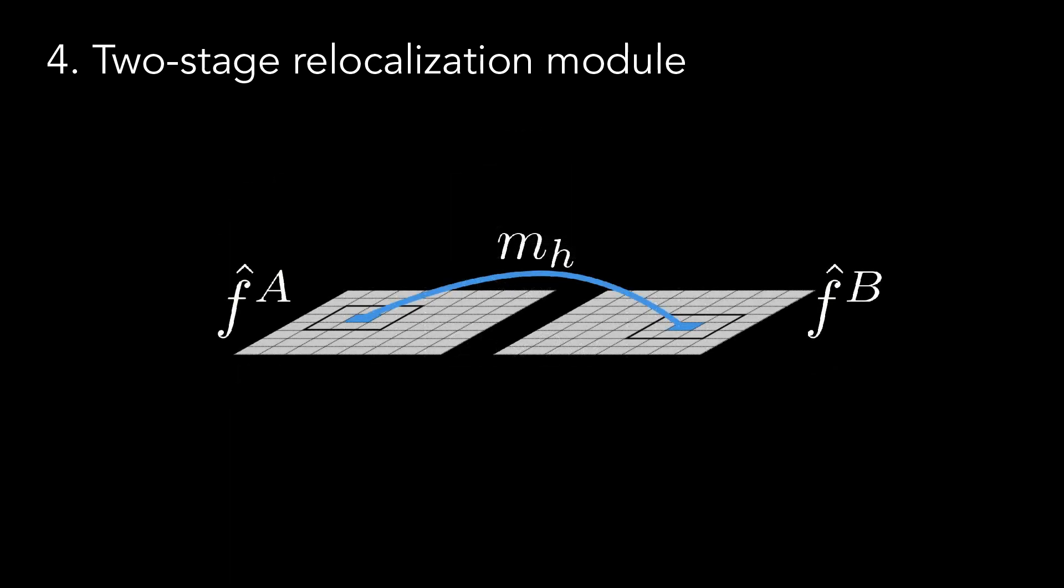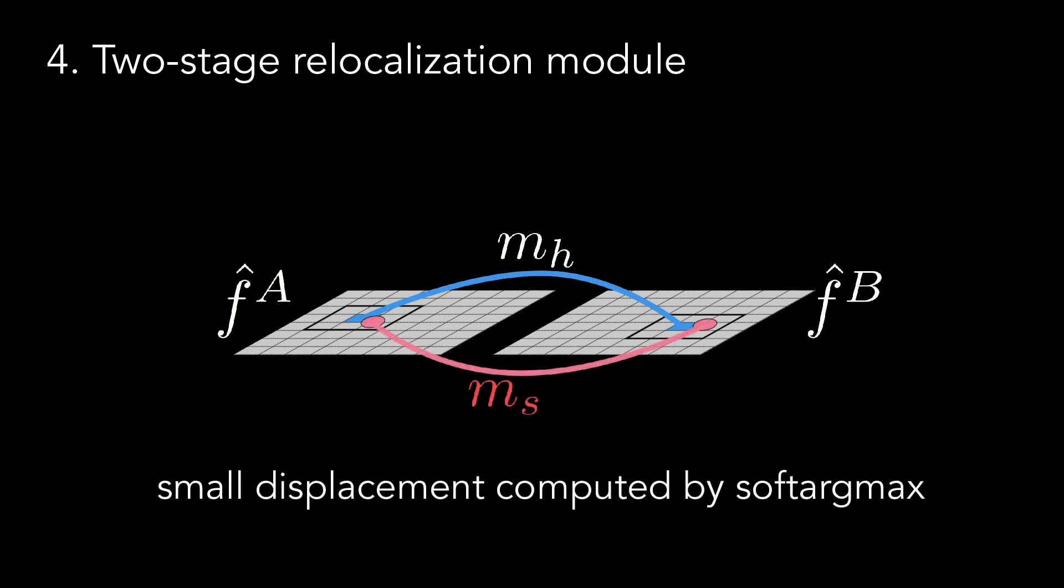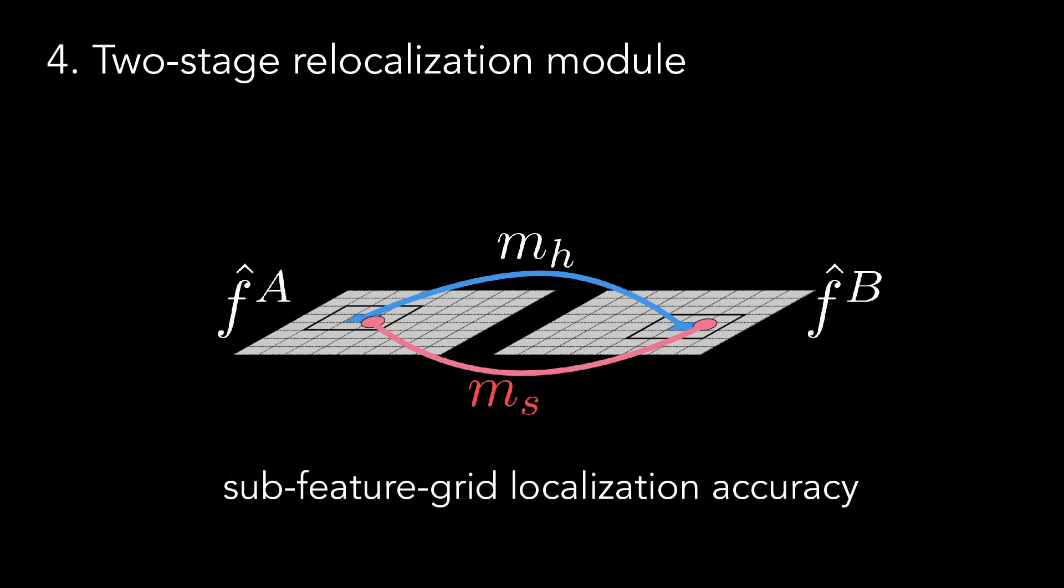In the second stage, we now analyze the local 3 times 3 feature regions around the previously computed matches. We then compute matching scores between the central feature in A and the 3 times 3 feature regions in B and vice versa, which are used to obtain a small displacement vector by means of a soft argmax operation, which consists of a weighted average of the displacement vectors using the soft maxed matching scores. Note that the output of this soft relocalization step is not constrained to lie in the grid of densely extracted features.